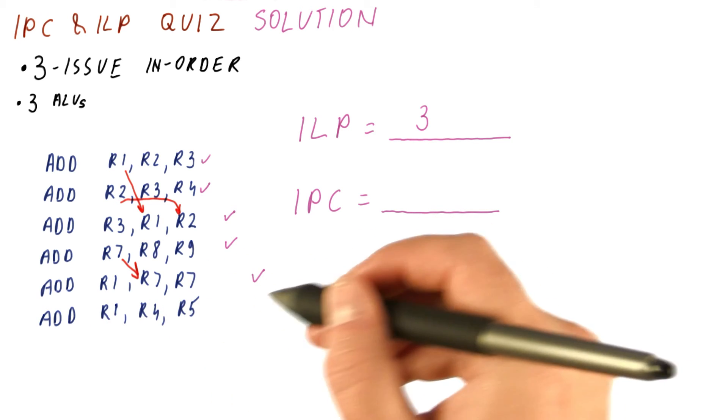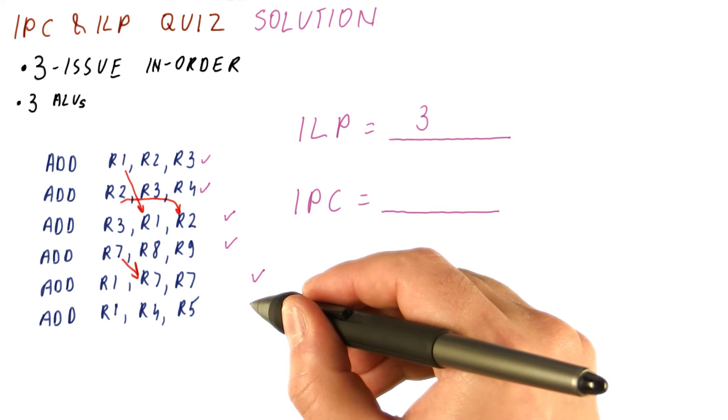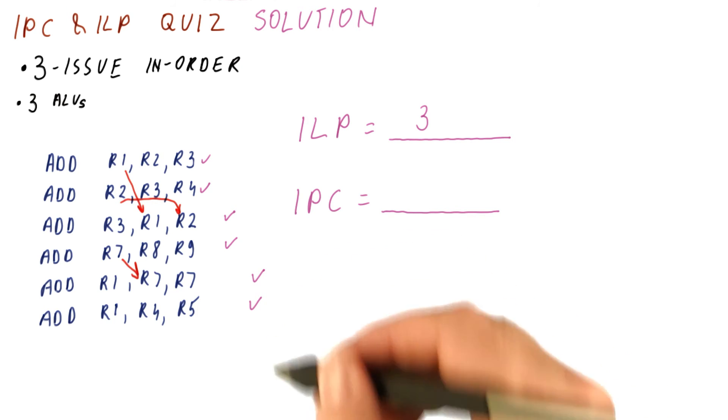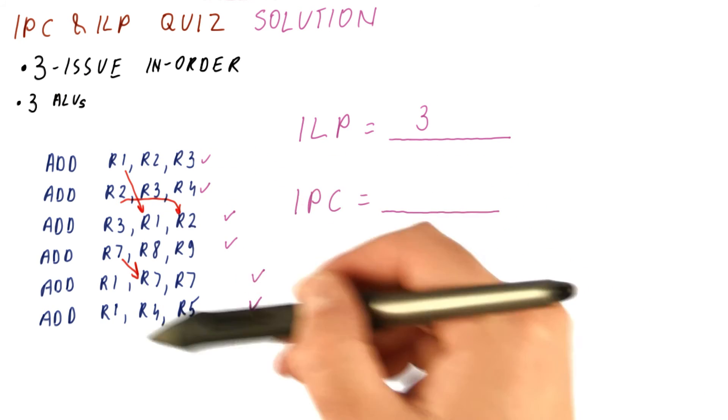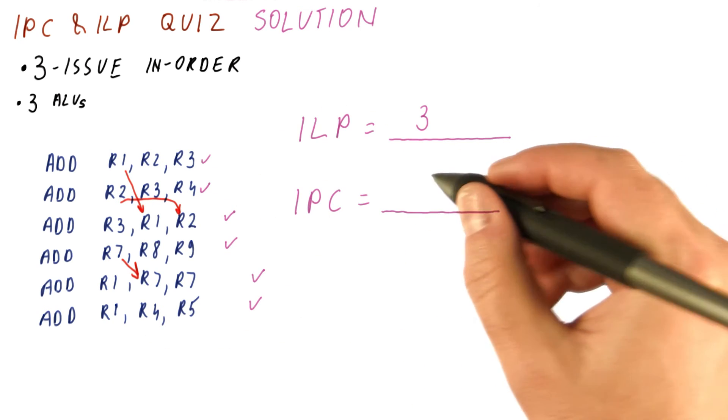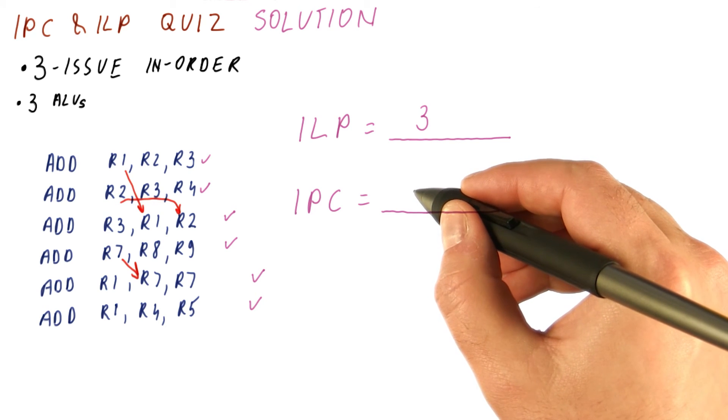So this would have to be done in the third cycle. And again, we cannot do this. So in the last third cycle, we will be able to finally do this and then this, because they don't depend on each other. So they can be done in the same cycle. So now we have six instructions over three cycles for an IPC of two.